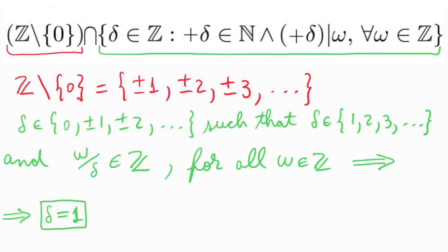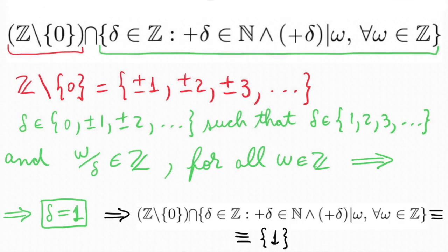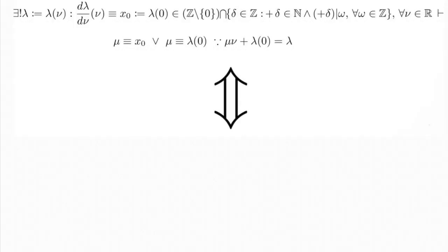This implies that the intersection of these two sets is nothing but the set containing only one element, namely 1. And thus, original expression can be simplified as the following.